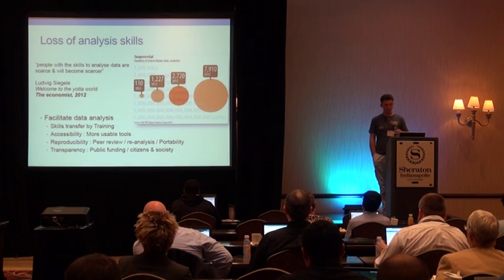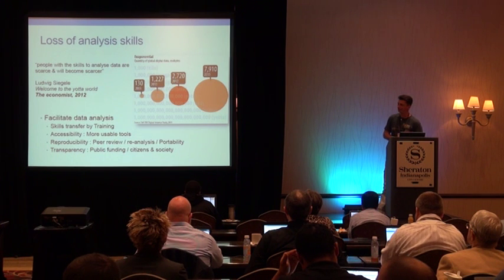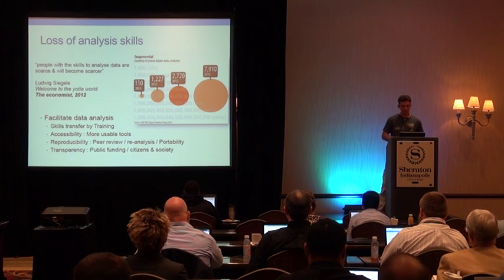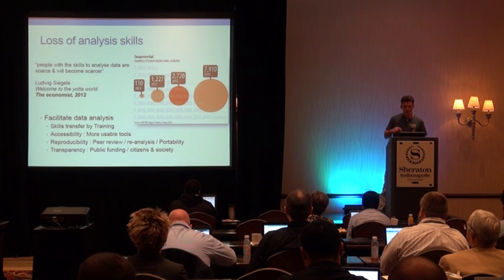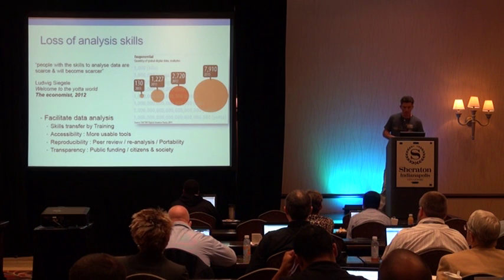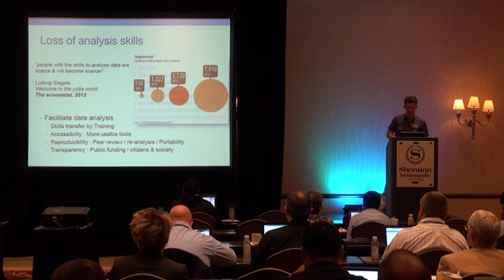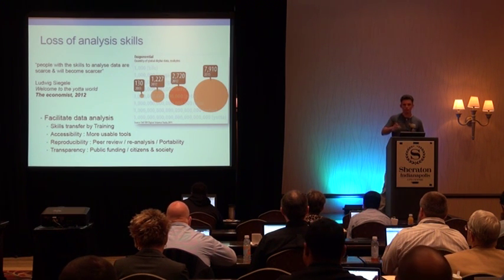The second part of the context: we see in economics projections for 2020 that there is an evolution where we need more and more analysis skills. At the same time, it's really difficult to find people who have these analytical skills. This is something really important and there is a danger in this evolution. We have to face it by facilitating data analysis through skill transfer and training, promoting the use of more usable tools for increased accessibility, promoting peer review, reanalysis and portability, notably to go towards more reproducibility. And we have to consider the importance of public findings and the relation between citizens and society to go towards more transparency.